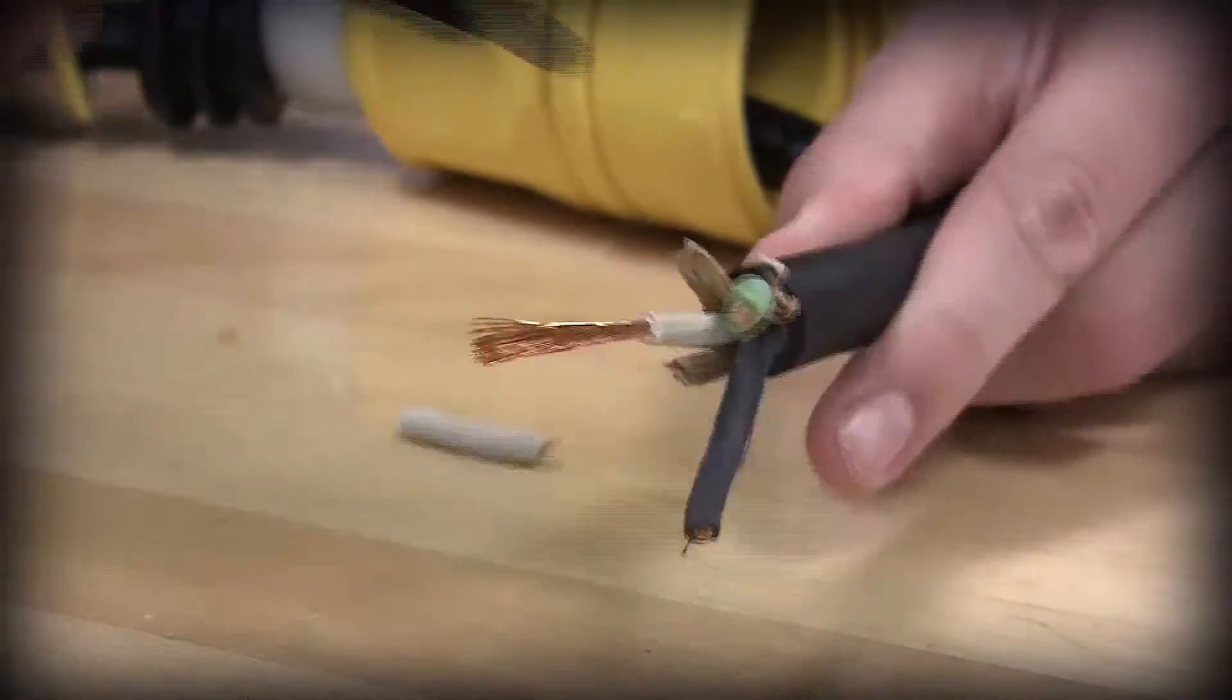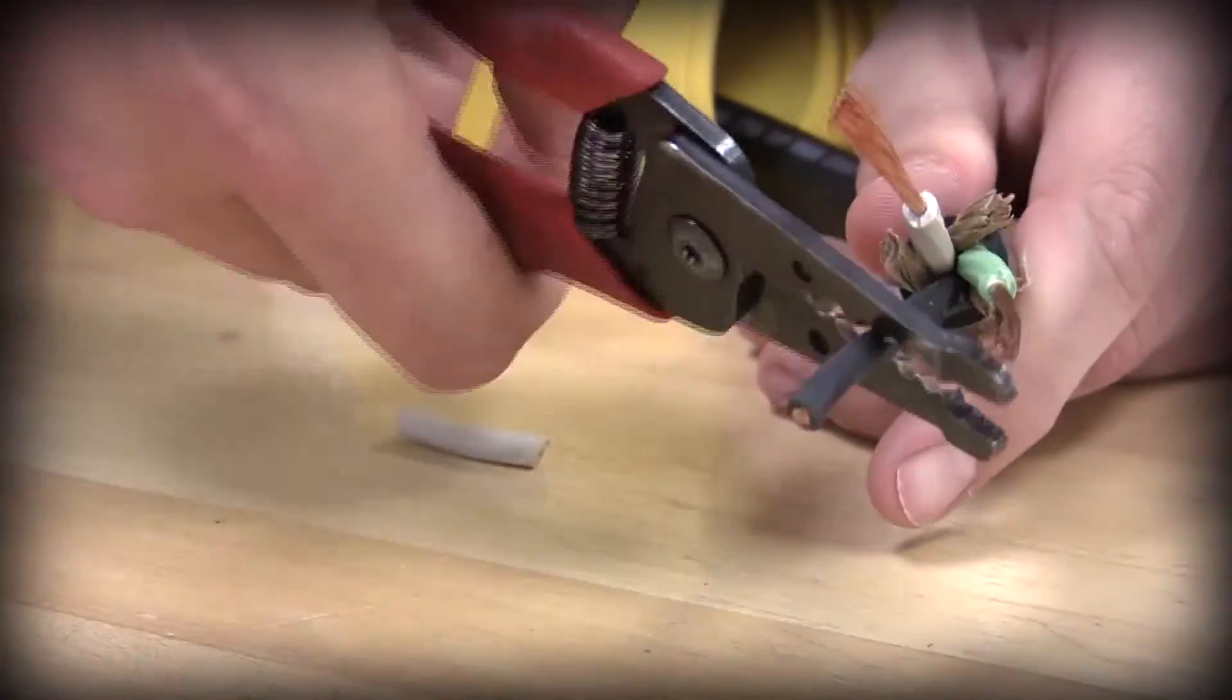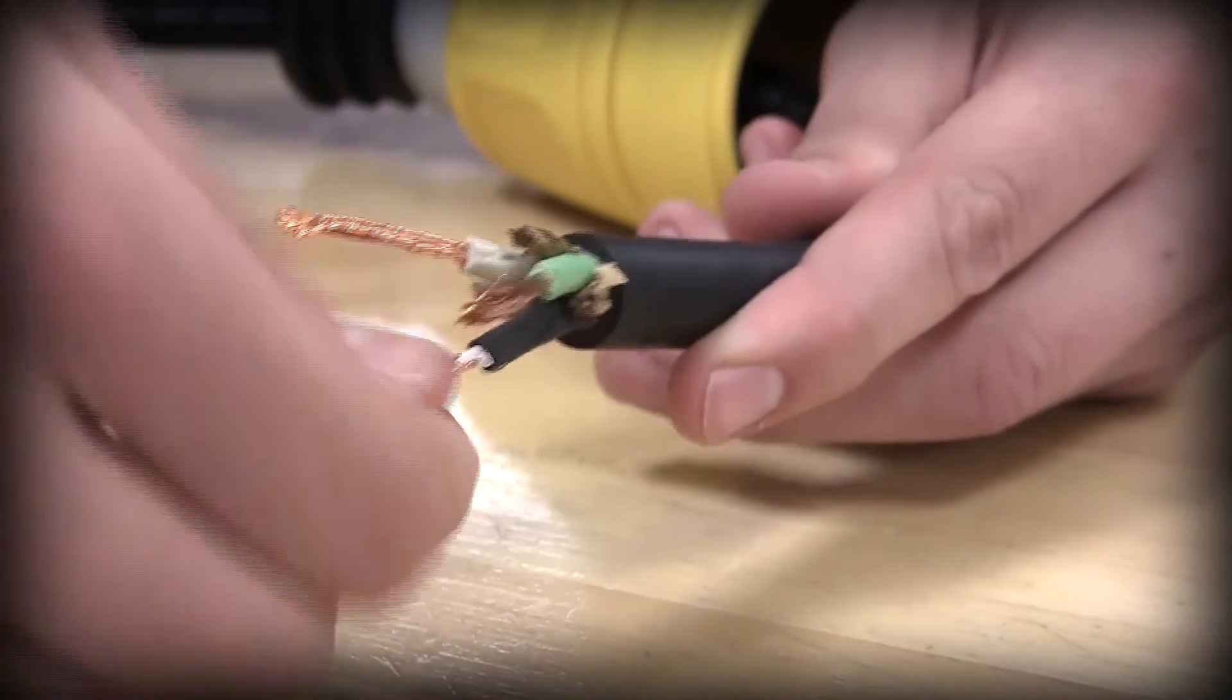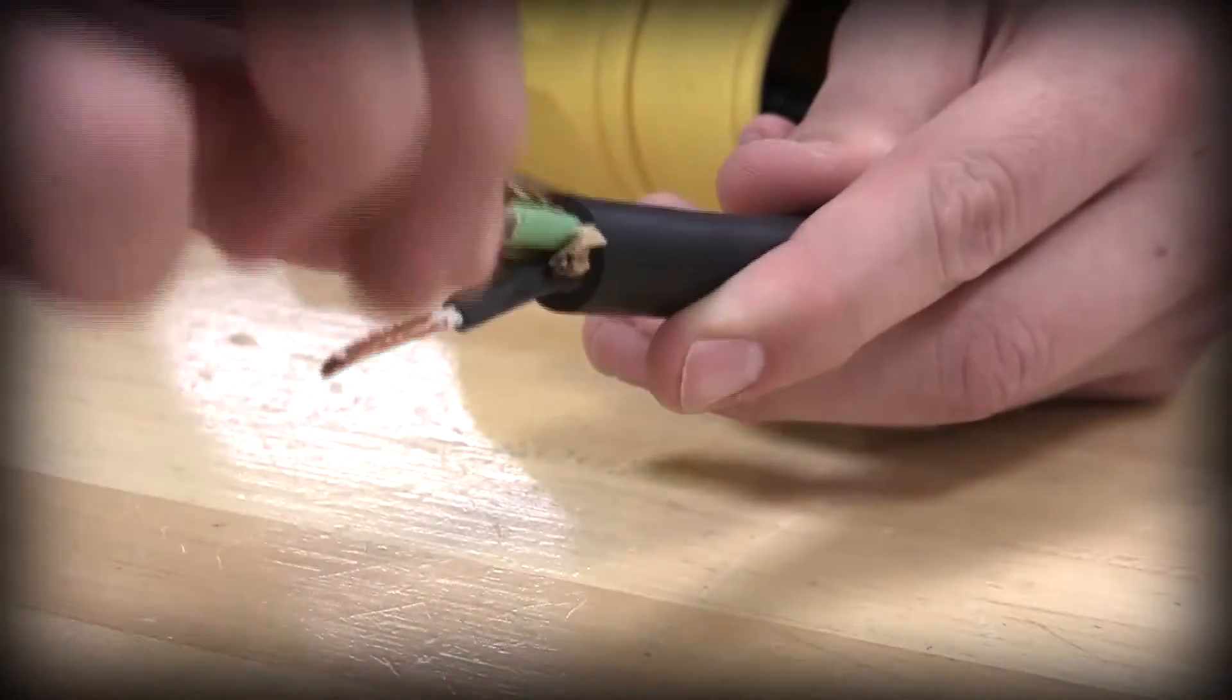Strip all the conductors half an inch. Twist the leads to eliminate frayed ends. Do not tin the conductors.